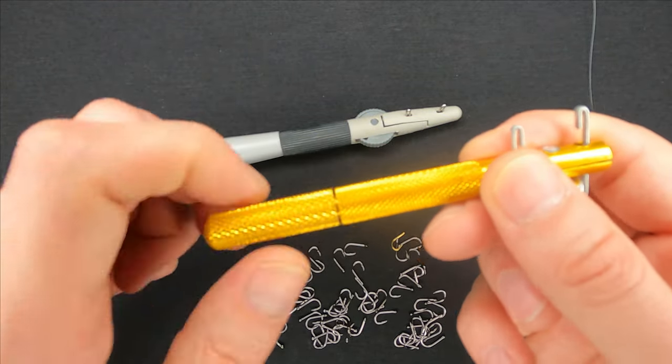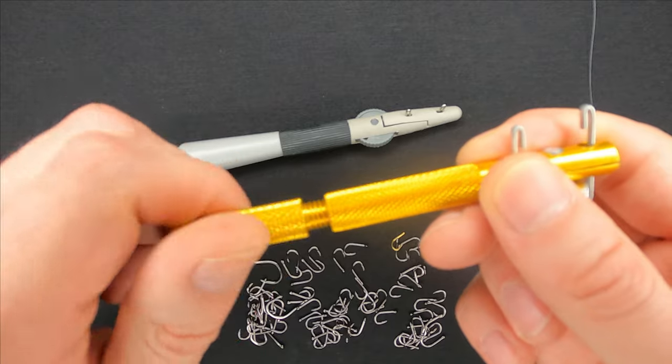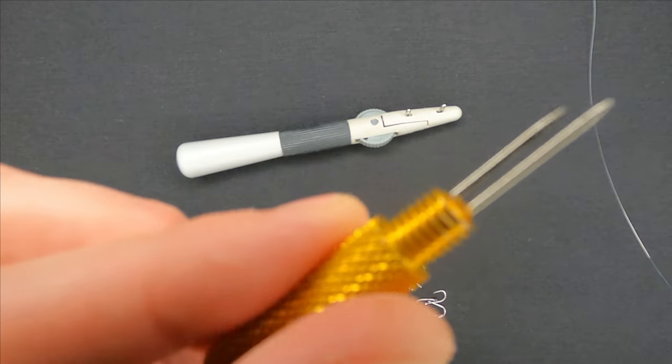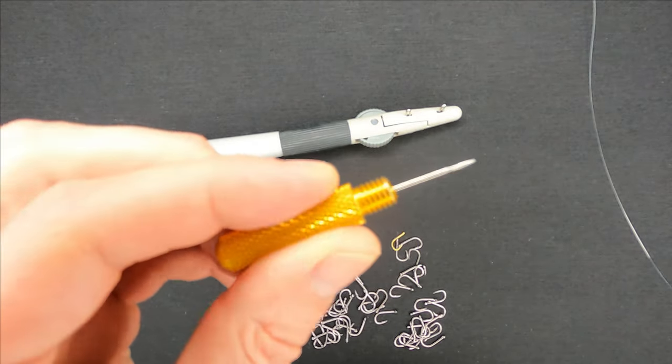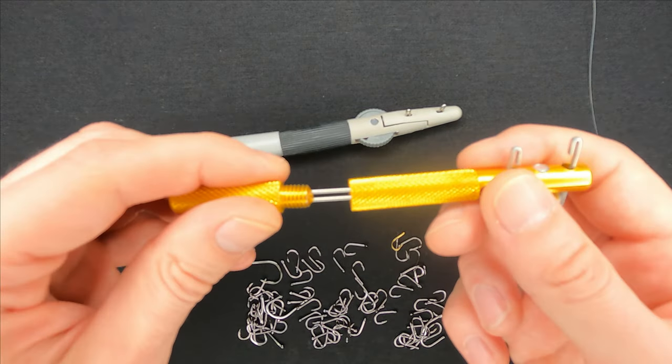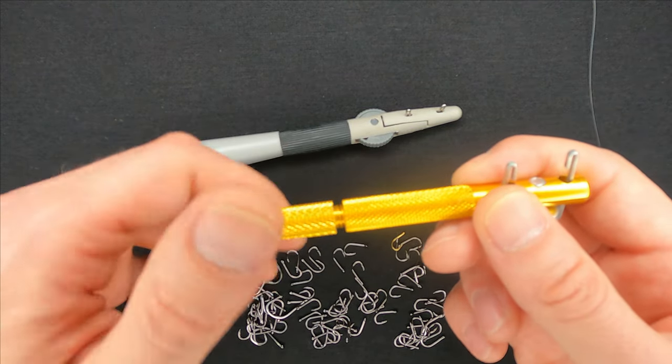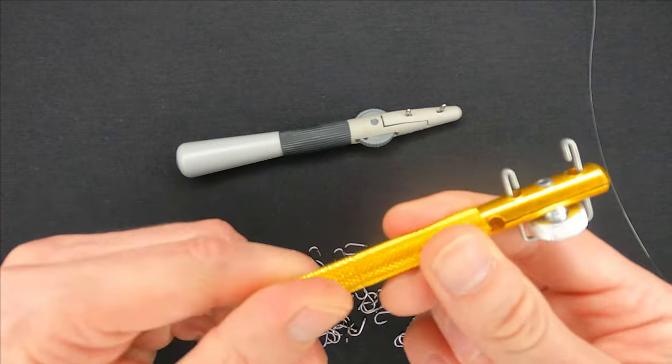At the back it has a bottom part which can be unscrewed and used for tying small hooks and making loops at the end of the line. I've already made a video on that and you can find it on my channel if you wish.